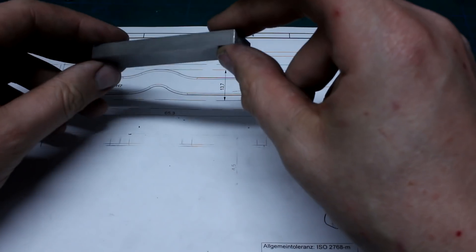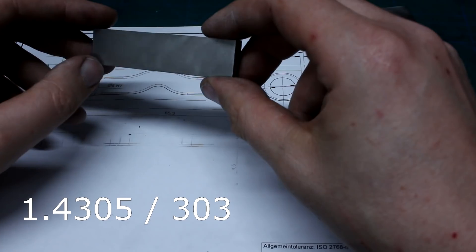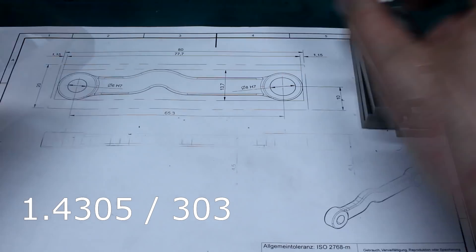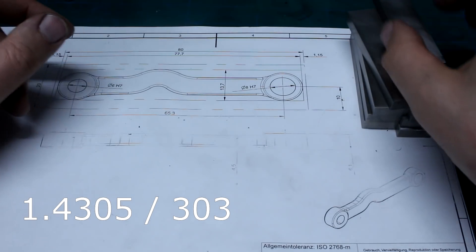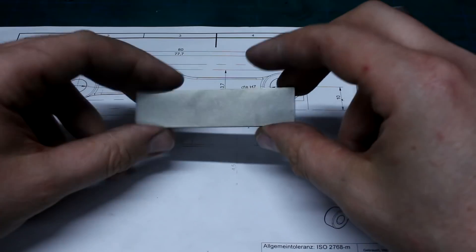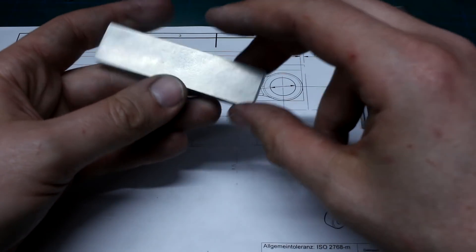We will machine it from stainless steel 14305. That's in the NZ World 303 stainless, which machines quite nicely. This is cold-drawn stock. It's not to size, not at all. It's completely oversized of course.